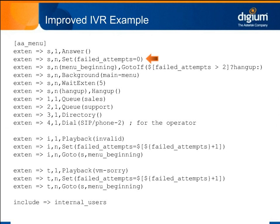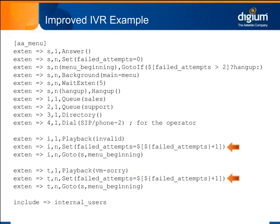We initially set a variable called failed attempts to zero. In the next priority, which we've labeled menu beginning, we check the value of failed attempts. If it's greater than 2, we jump to the hangup priority of the S extension. If it's not greater than 2, we continue dial plan execution at the next priority. Now look at the I and T extensions, which are used when the caller inputs an invalid number or doesn't input anything before the timeout. Each of them plays back a message, increments the failed attempts variable, and then routes back to the beginning of the menu. If a caller fails to input a valid extension in the first three attempts, then the expression in the GoToIf becomes true, and the call is routed to a priority where it is hung up.